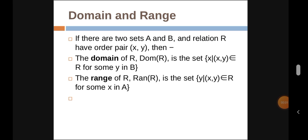Now we will see the domain and range. If there are two sets A and B and relation R have order pair (x, y), then the domain of R, Dom(R), is the set {x|(x,y)∈R for some y in B}.